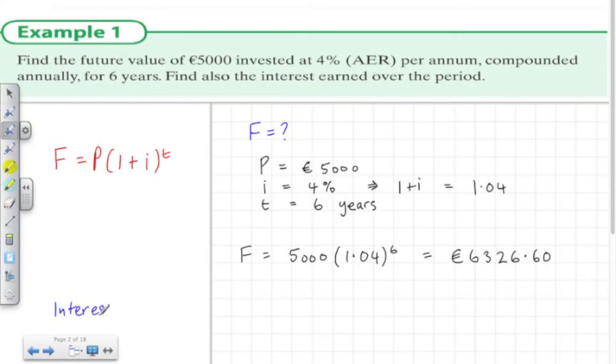What then is the interest? The amount of interest would be the future value take away the present value. So it's the extra money we end up with. So this is six thousand three hundred and twenty six sixty, take away five thousand, which is one thousand three hundred and twenty six sixty.